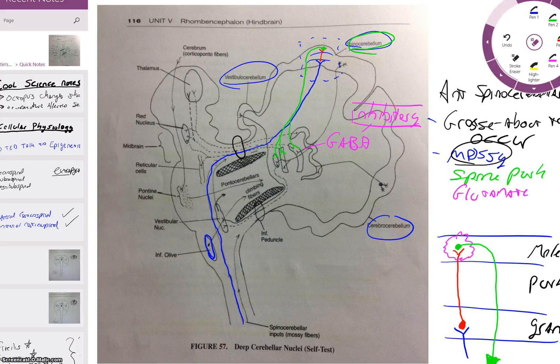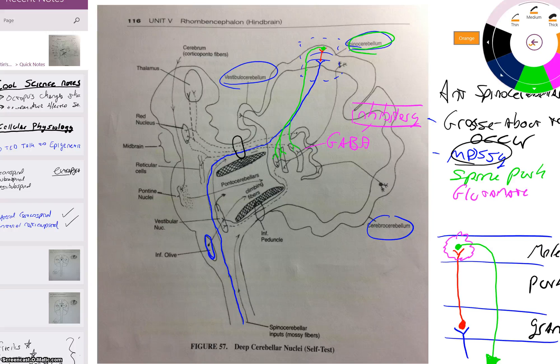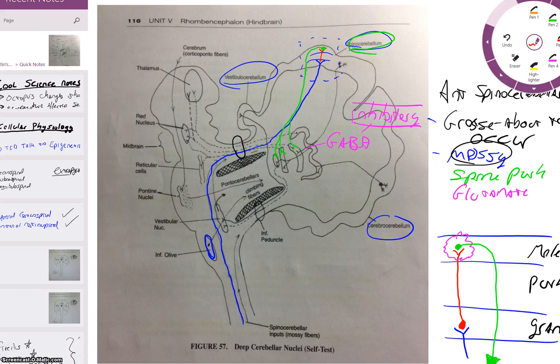Now when it gets there, I'm going to have to grab another color here. Once it gets there, then these three nuclei here, one, two, three, they all have three options.